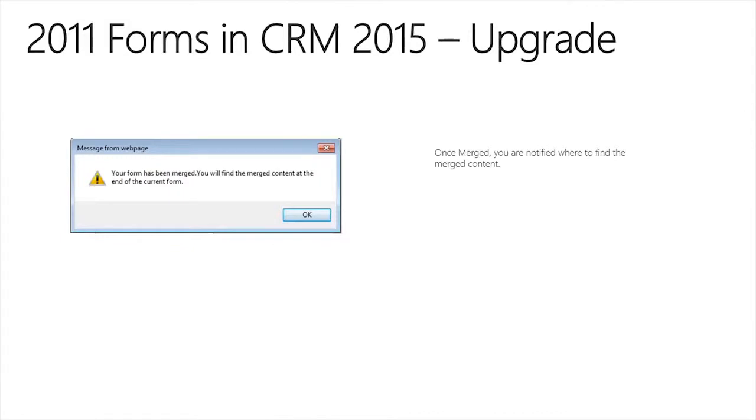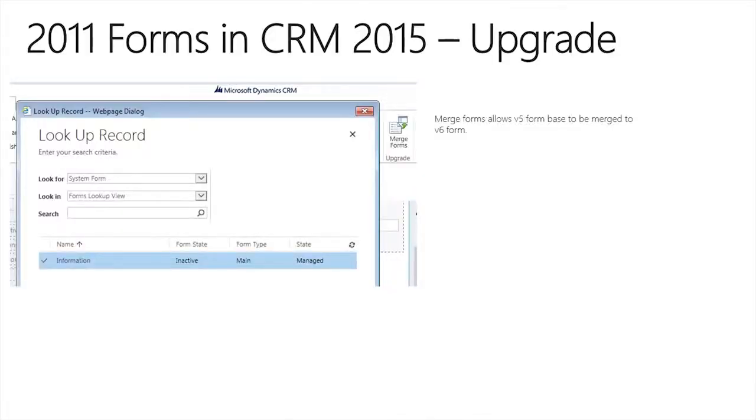The form named 'Account' is the CRM 2013 form. You'll also notice the ability to activate or deactivate a form — a feature added in CRM 2013 to support this work. To move forward, you open up the CRM 2013 form, where you'll find a button called Merge Forms. That button is only activated on a CRM 2013 based form. When you click it, you're presented with a lookup dialog to select the 2011 form. When you choose and import that form, it takes your customizations from CRM 2011 and moves them to the bottom of the CRM 2013 form.